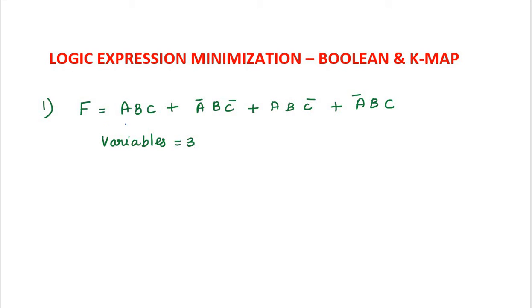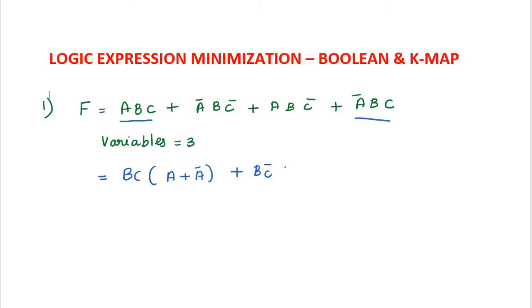Now I am going to minimize this expression using Boolean laws. First, I have to take terms 1 and 4 — BC is common, so BC(A + A'). Next, consider terms 2 and 3 — BC' is common, so BC'(A + A').